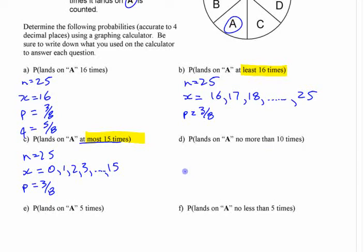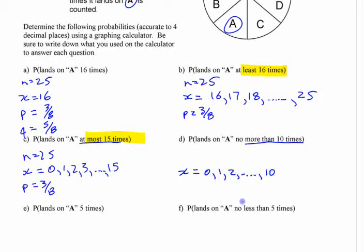What does 'no more than 10' mean? What's x here? 'No more than 10' means something different than 'less than 10.' No more than 10 means 10 and under — it includes 10. So this is 0, 1, 2, up to 10.